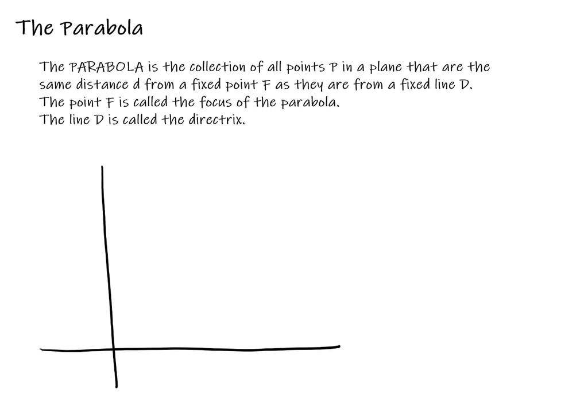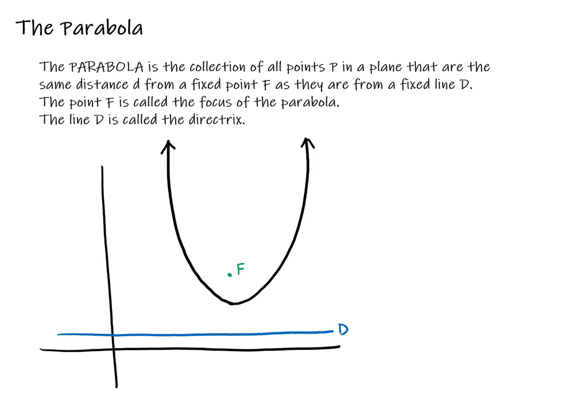Let's draw our two points. Here is our fixed point called the focus. And then here is a fixed line called the directrix. The collection of all the points that are equidistant from the focus and the directrix is called the parabola. It might be hard to see that all the points on the parabola are equidistant from the focus and the directrix, because this is a hand sketch drawing.